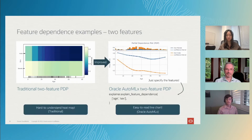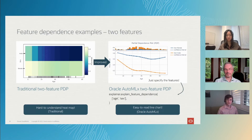We can also do this for more features. Traditionally this is done as a heat map, but we've improved this to show it as two different lines on a plot, which makes it easier to use. This figure is automatically generated for you.